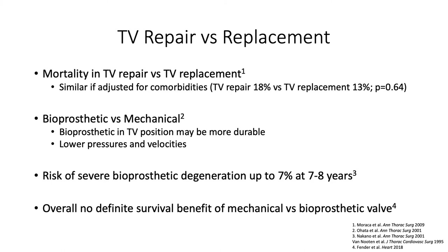When comparing mortality in tricuspid valve repair versus replacement, they appear similar if adjusted for comorbidities. For bioprosthetic valves in the tricuspid valve position, they appear to be more durable, possibly as a result of lower pressures and velocities. However, the risk of severe bioprosthetic degeneration may be as high as 7% at 7 to 8 years, and overall there is no definite survival benefit between a mechanical versus a bioprosthetic valve.